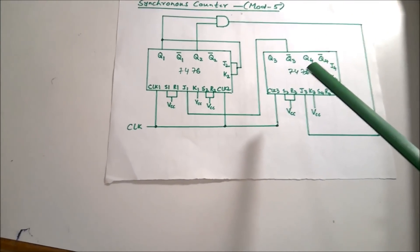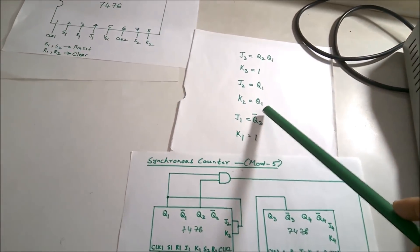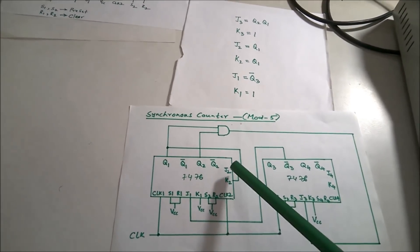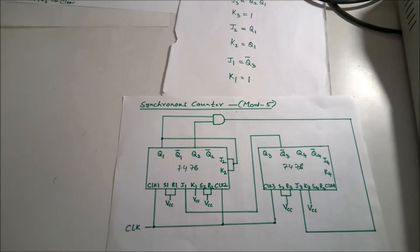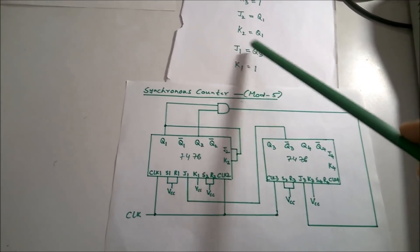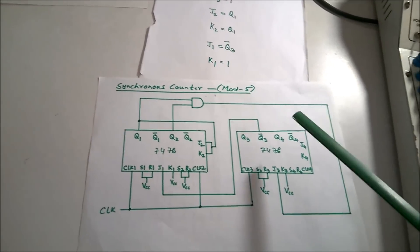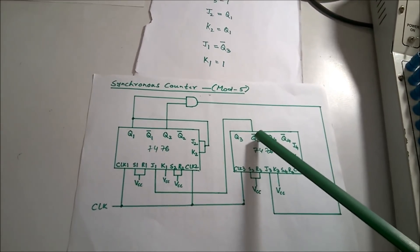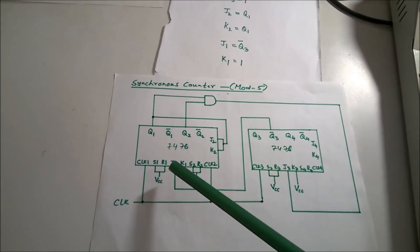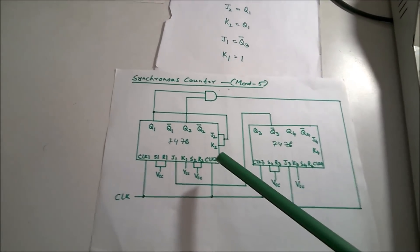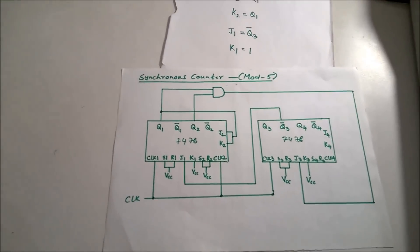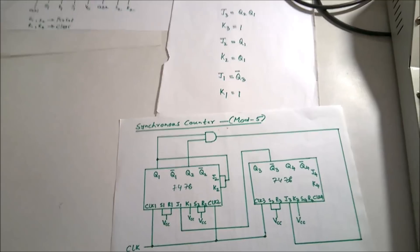J2 and K2 are both connected to Q1, as per the design. For J1, it is connected to Q3-bar, which is the Q1-bar output of the second IC. K3 is connected to VCC since K3 = 1, and K1 is also connected to VCC since K1 = 1.